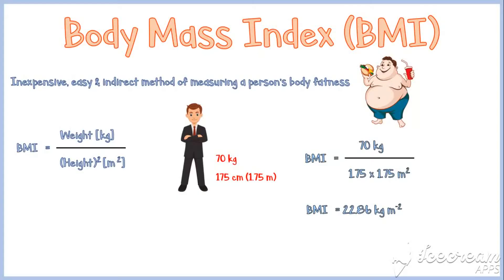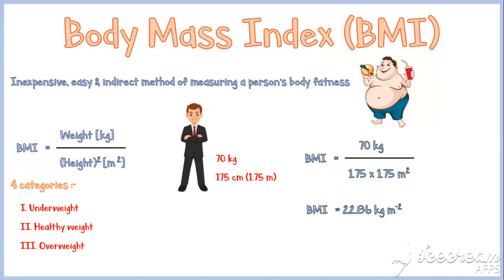According to the BMI value, people can be categorized into four major types: underweight people, healthy weight people, overweight people, and obese people.